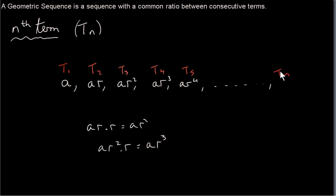Now, what about the nth term? Well, let's look at the pattern. We can see that the power of R is 1 less than the subscript of T. So, we're going to have the same situation here. We're going to have AR to the power of something. But that something is going to be 1 less than the subscript. What is 1 less than n? Well, if n is 5, then the power is 5 minus 1, which is 4. If n is say 4, then the power will be 4 minus 1, which is 3. So that gives us a formula for Tn of a geometric sequence. Tn is AR to the power of n minus 1.